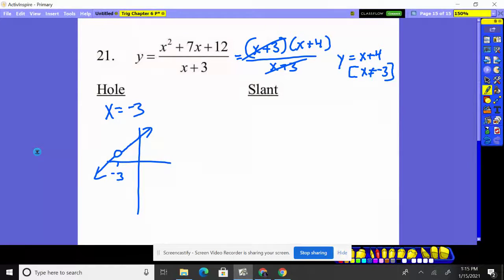Now, look, slant occurs when the top is one degree more than the bottom. And that's true here. However, this guy crossed out and became nothing but that simple line. So there is no slant because things crossed out and left us with just the line x plus four.